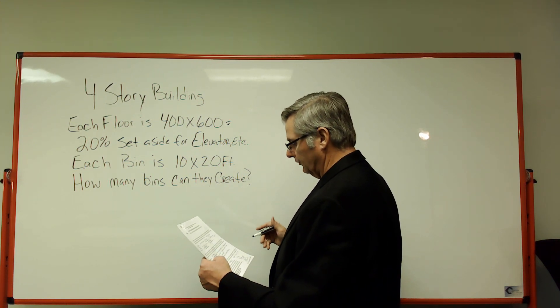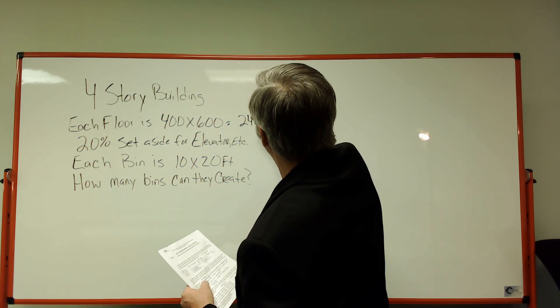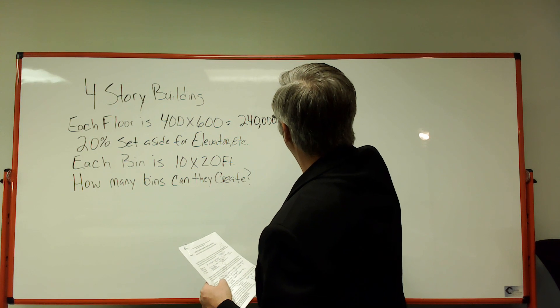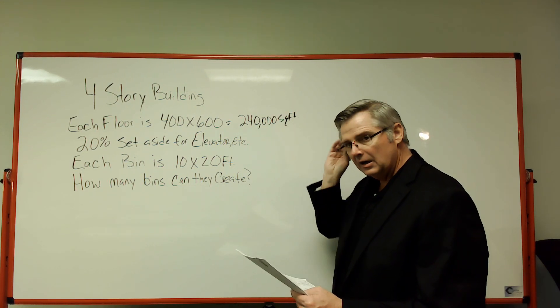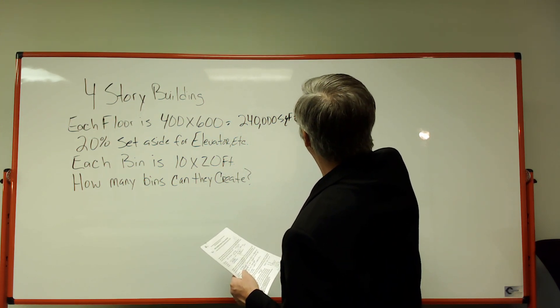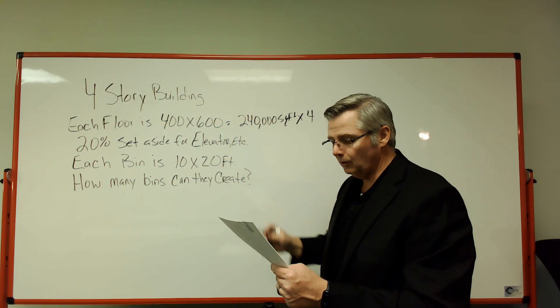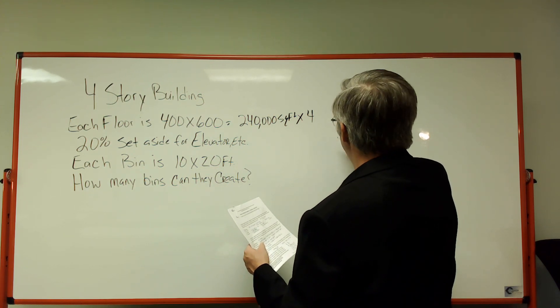That's going to be 400 by 600, which is 240,000 square feet. We got 240,000 square feet. But that's not all, because there's four stories. So I'm going to take that 240 times four, because there's four floors on this building. That's going to come out to 960,000 square feet.